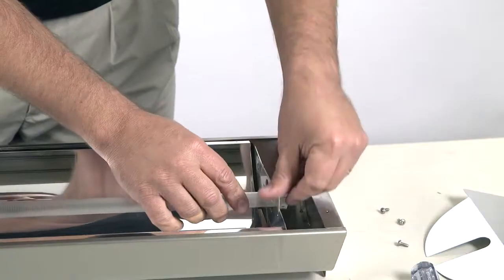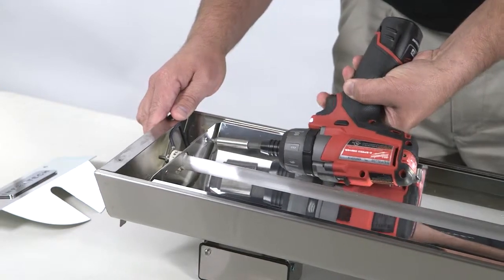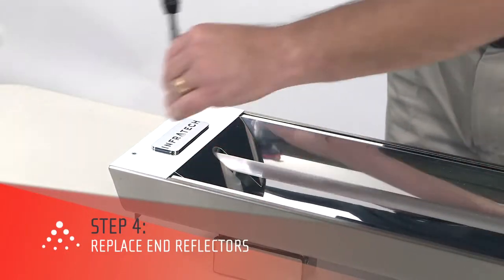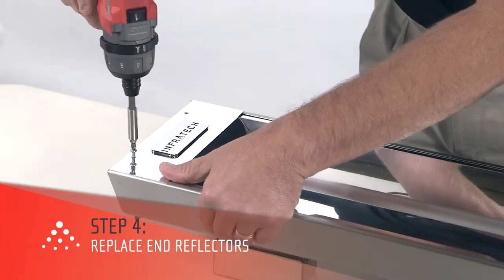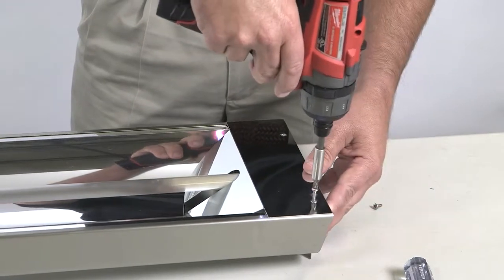Now you can close the retaining clips on both sides of the heater and reattach the screws. Next, you'll need to replace the end reflectors by reattaching both screws to each reflector. Repeat this step on the opposite side of the heater.